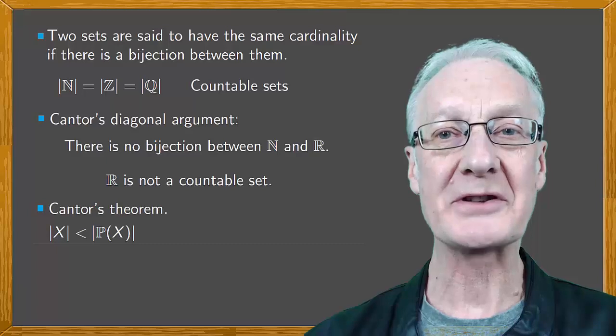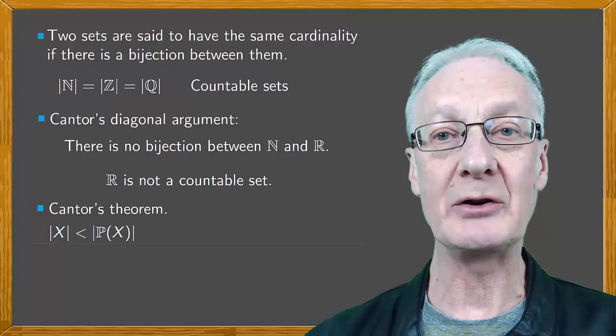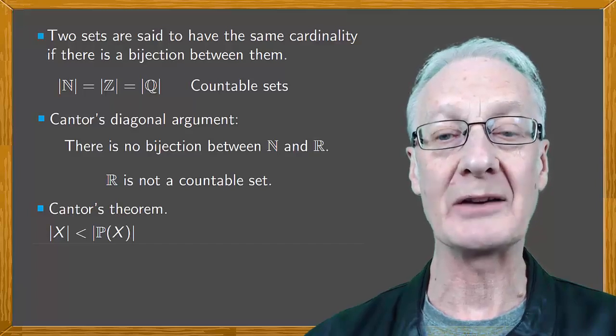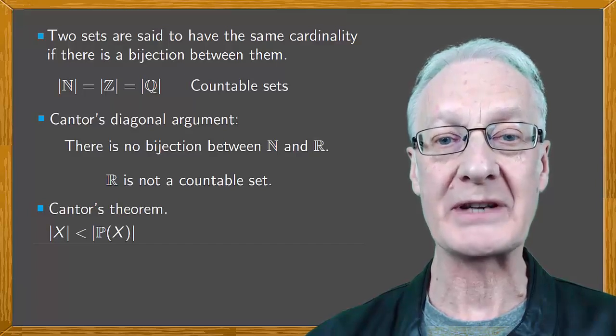It's then enough to start from the cardinality of the natural numbers, which is the infinity known as aleph zero or aleph null, and to consider at each step the power set of the previous set.